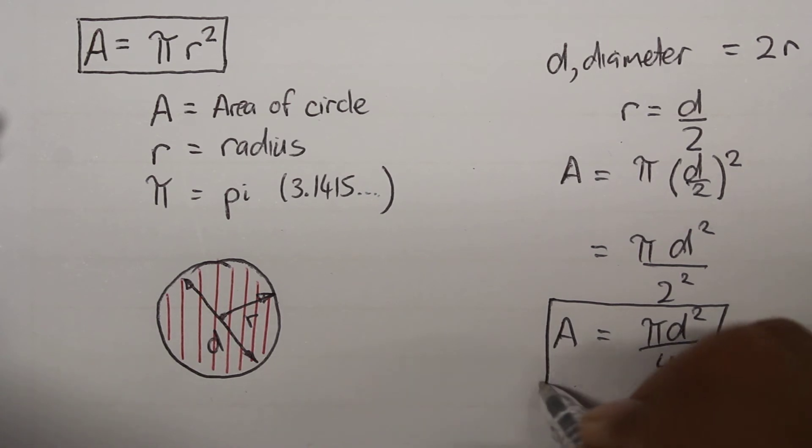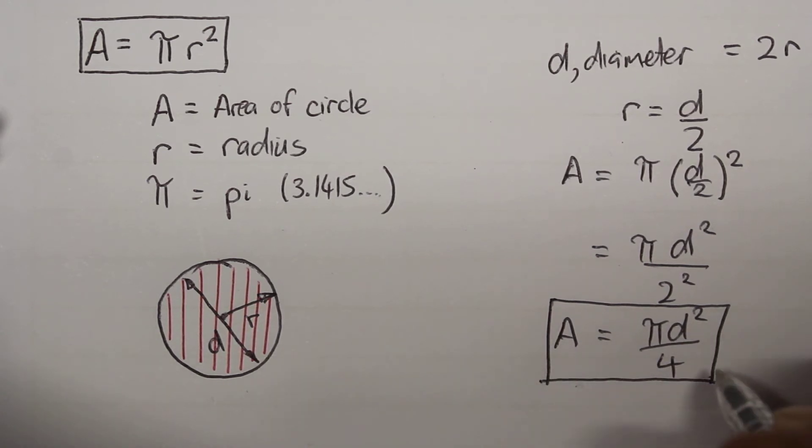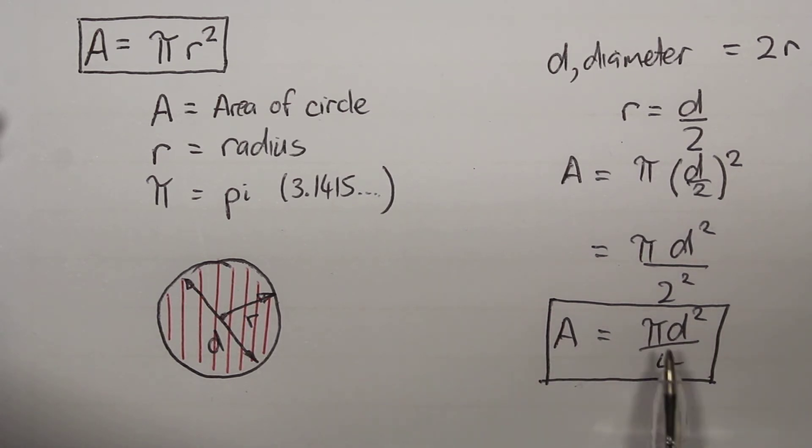So this equation here is used quite a lot within engineering because it's more commonly used that you get the value of d for things like pipes and tubes and so on.